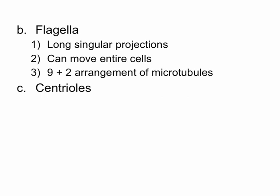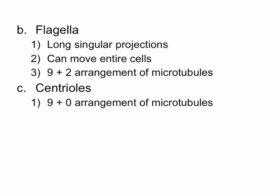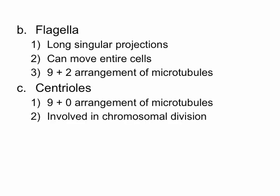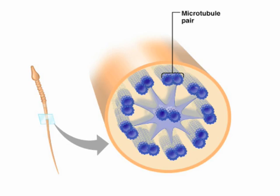One of the last organelles we'll look at is the centriole, which is also created via microtubules. Centrioles have a 9 plus 0 arrangement of microtubules — 9 doublets with no microtubules in the center. The centriole's function is involved in chromosomal division. When we need to separate chromosomes to opposite sides of the cell, centrioles grab on and create a spindle apparatus to separate the chromosomes. This picture shows a cross section of a flagellum with the 9 plus 2 arrangement of microtubules.